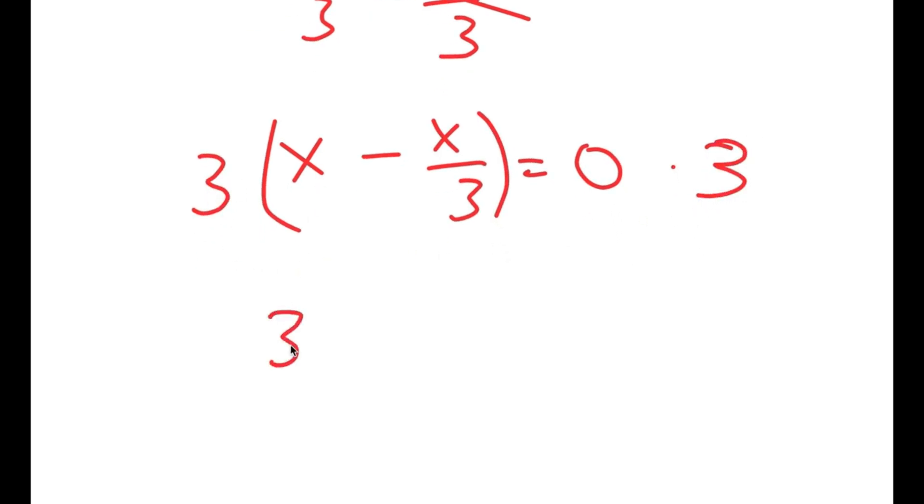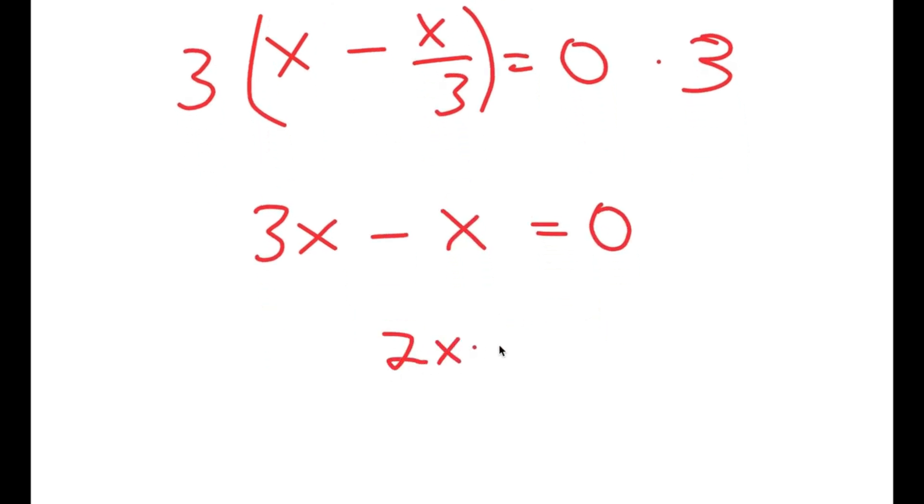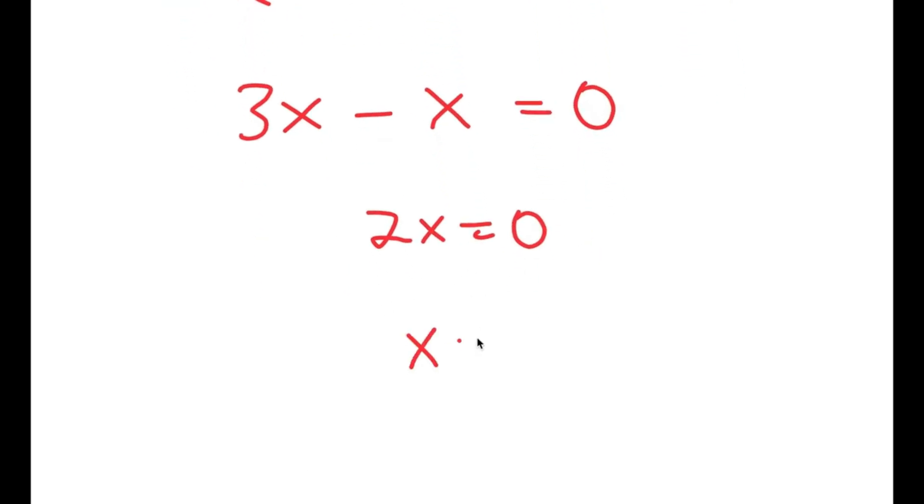So 3 times x is 3x, and 3 times x over 3 is just x. So I get 3x minus x is equal to 0, meaning 2x is equal to 0, and x is equal to 0.